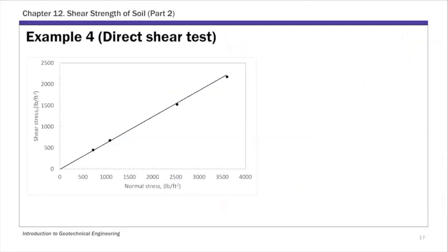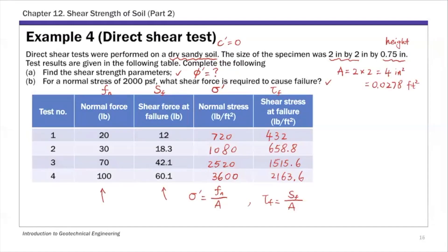That's shown on this graph here. There are four data points. Each of these data points is a combination of sigma prime and tau f. That's basically these last two columns from the previous table. We're plotting sigma prime and tau f.